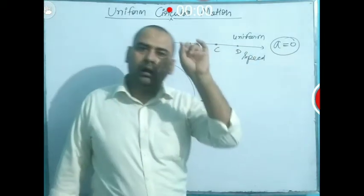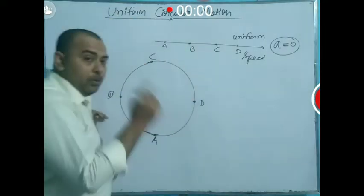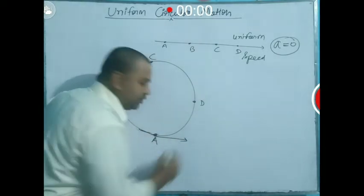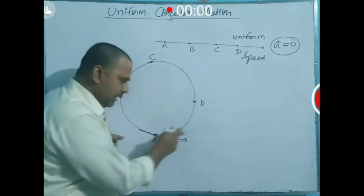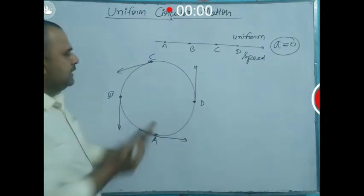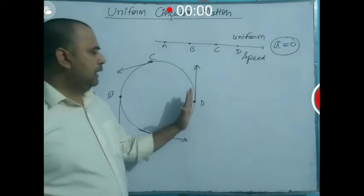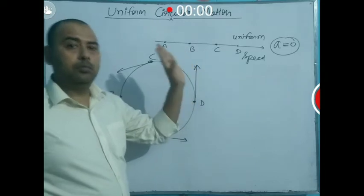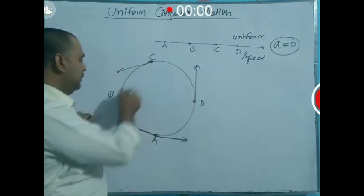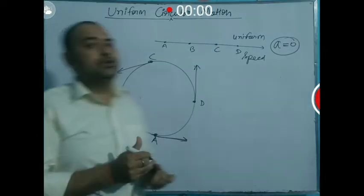The body is moving in one direction, but in circular motion, at every point of the circle — say point P — the direction changes. These changing directions are known as tangents at each point of the circle. So at point A, B, C, and other points on the circle, the direction of motion changes.